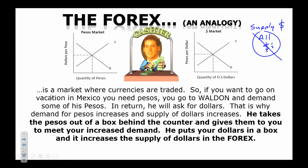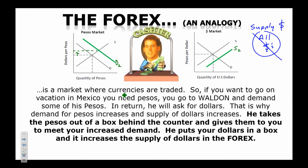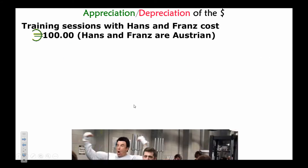Here's an analogy: if you want to go on vacation in Mexico, you need to buy pesos. Your demand for pesos increases, driving the price of the peso up. In exchange, you give dollars, which go back into the foreign exchange market — increasing the supply of the dollar there. There aren't necessarily more dollars in the world, but in the foreign exchange market there are more, so the price of the dollar goes down.